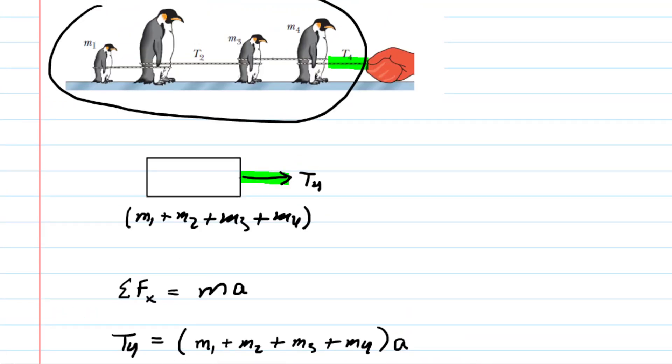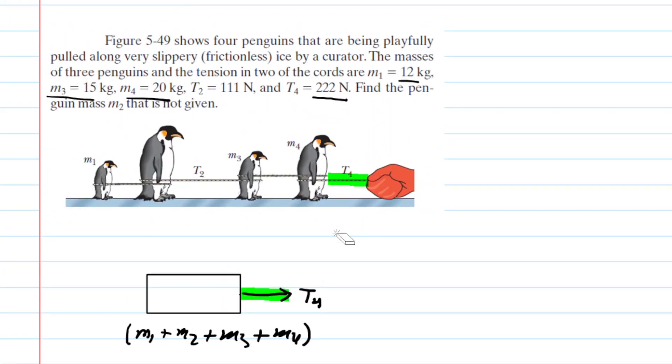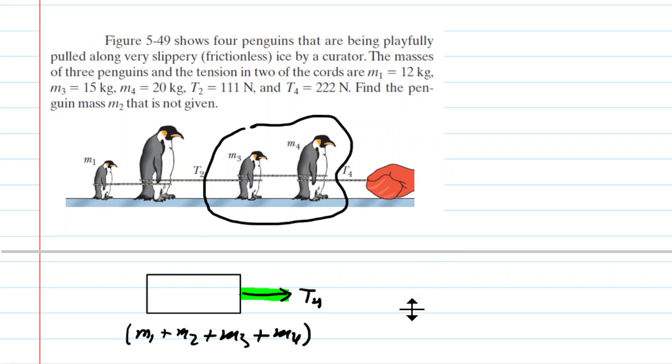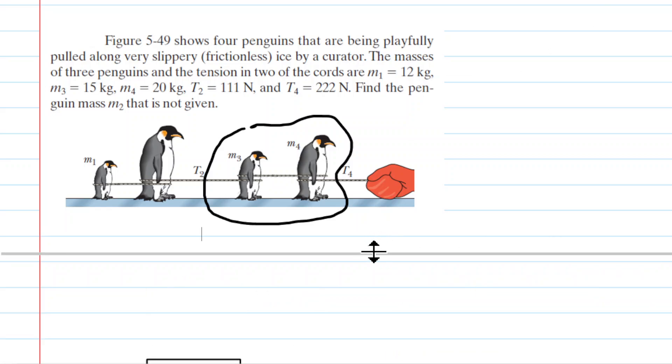So let's go back to the original picture, and we're going to choose a different system. And that's, again, the beauty of this question—it teaches us that we can choose a system strategically to make our problem solving the most efficient as possible. Now, in this case, we're going to choose a system that includes the penguins marked m3 and m4. You'll see why we're going to choose this system in just a moment. Let's go ahead and redraw that system in a more simplified manner, just like we did earlier.